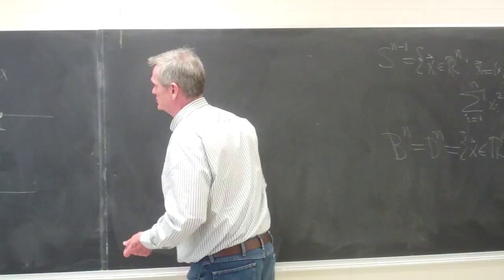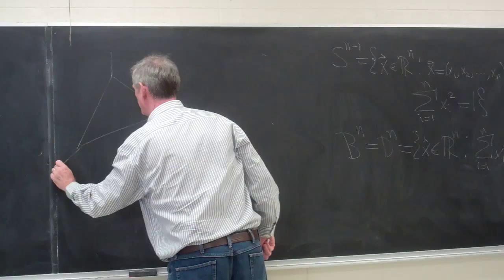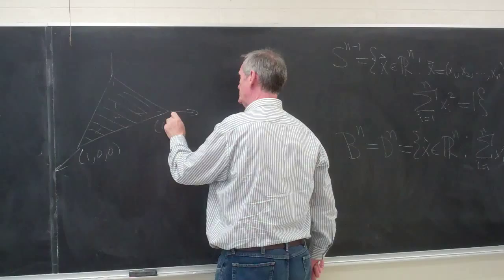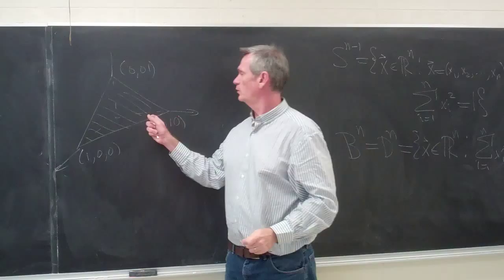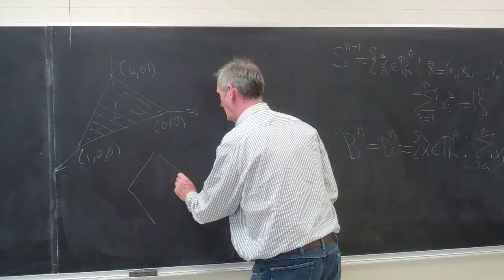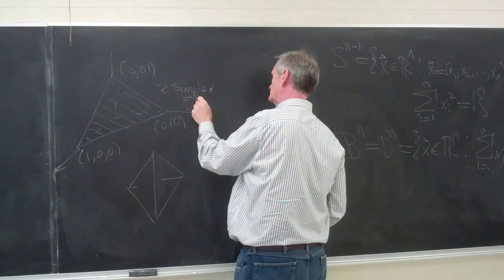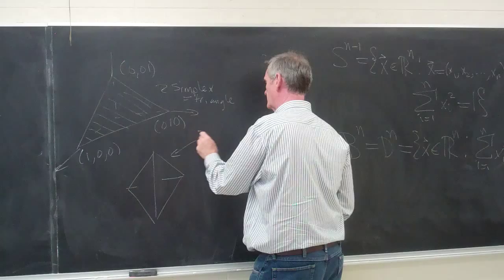And the two-dimensional simplex is better known as a triangle. It's the set of points in space where the coordinates add to one and then all the coordinates are non-negative. So that's that equilateral triangle there. And in four space, we can draw a three simplex which winds up being a tetrahedron. So the two simplex is a triangle and the three simplex is a tetrahedron.